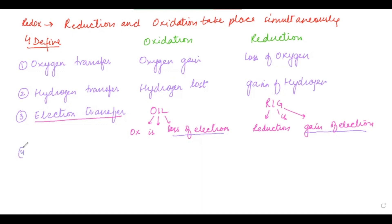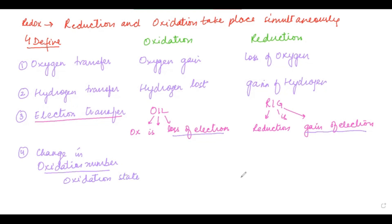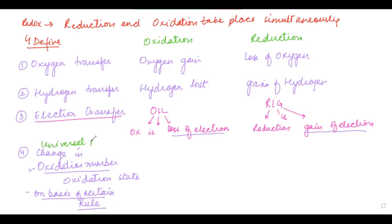The fourth definition is said to be the universal definition — it is a change in oxidation number. Oxidation number, also called oxidation state, is assigned to an element in a particular compound. For example, in copper(II) oxide, 2 is the oxidation state assigned to copper. We calculate the oxidation number on the basis of certain rules. This is a universal definition which can be applied to determine whether the reaction is redox or not.